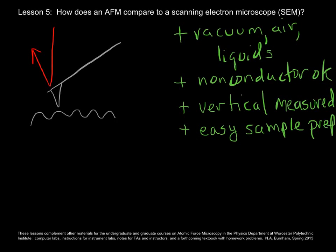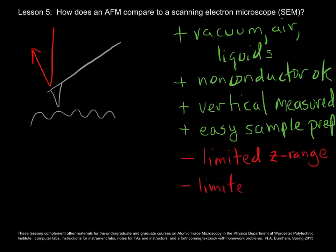What are the disadvantages? There's a limited Z range — most AFM scanners cannot accommodate height changes of more than a few microns. Also, the lowest magnification — when you want to see all of the sample — is limited to maybe 100 by 100 microns at a time, whereas in SEM you can see up to about a centimeter of your sample. So many AFMs use an optical microscope to see where the cantilever is over the sample, which adds some complications and expense.